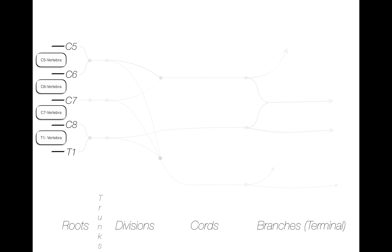The C5 and C6 roots merge to form the superior trunk. The C8 and T1 roots merge to form the inferior trunk. And we will simply say that C7 continues alone to become the middle trunk.